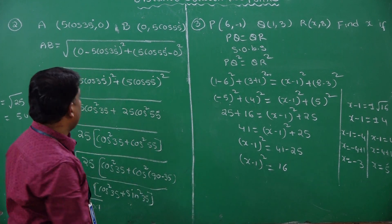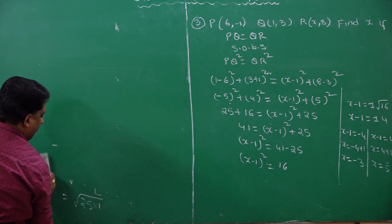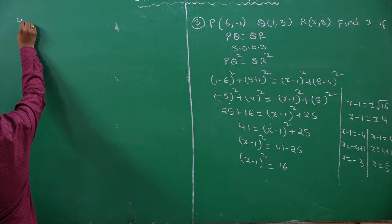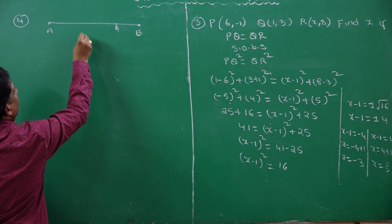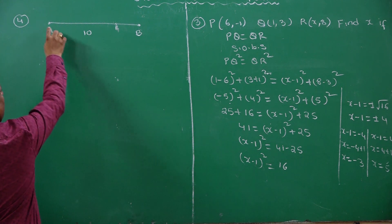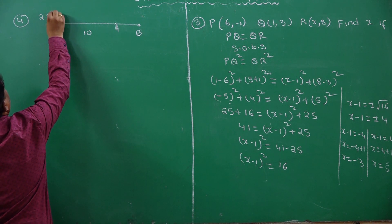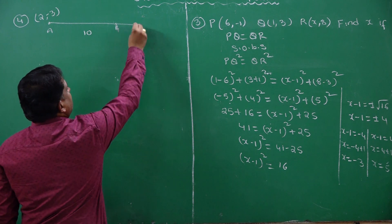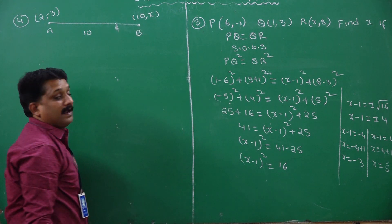Now we will discuss one more problem. You have a line segment of length 10 centimeters, meaning I have a line segment AB of length 10. The distance between these two points is 10. One end of the line segment is A(2, minus 3). The other end has abscissa 10, and I need to find the ordinate. I will assume the ordinate to be y.